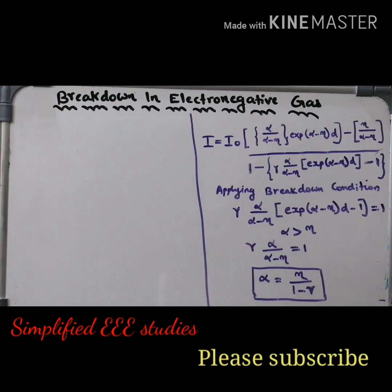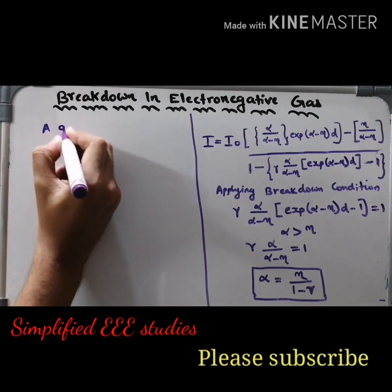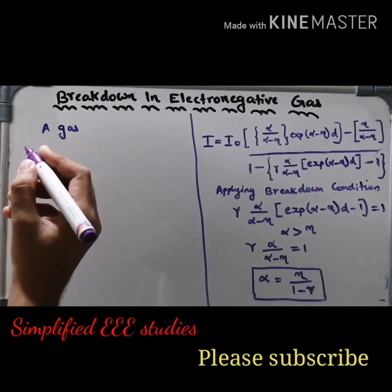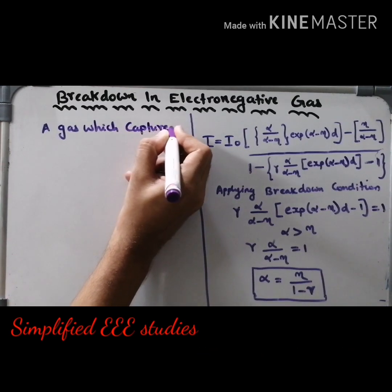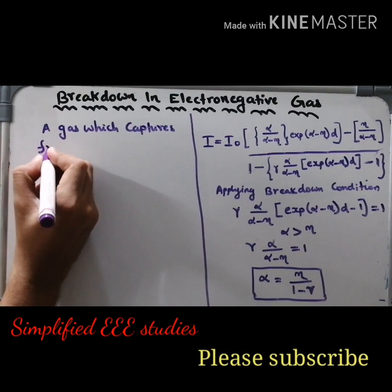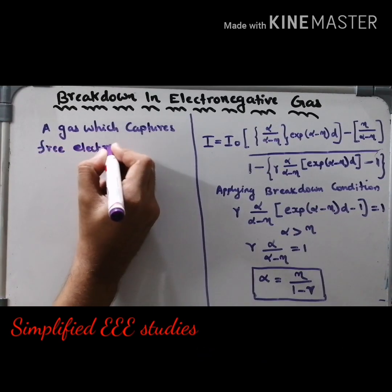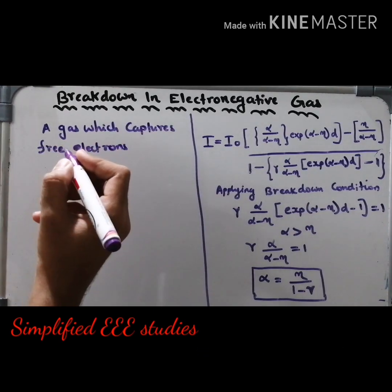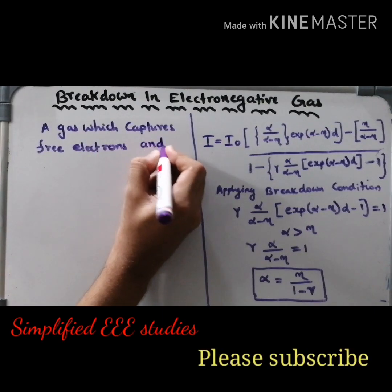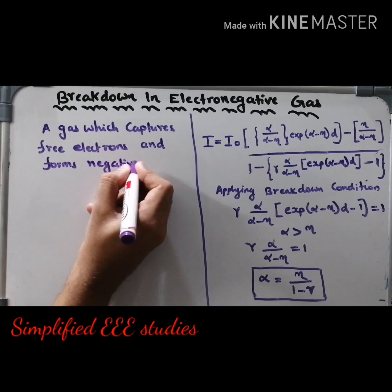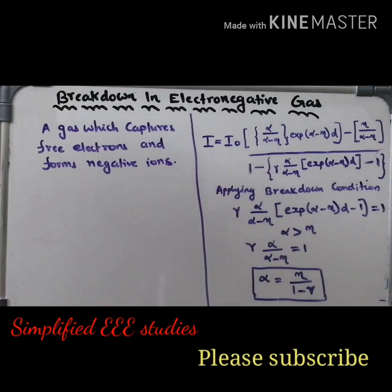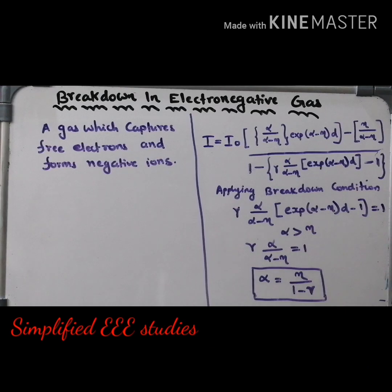First let us discuss what is electronegative gas. Electronegative gas is a gas which captures free electrons and forms negative ions. This type of gas is generally known as electronegative gas.